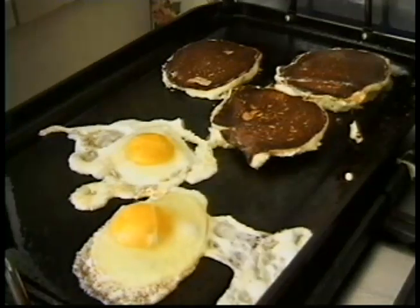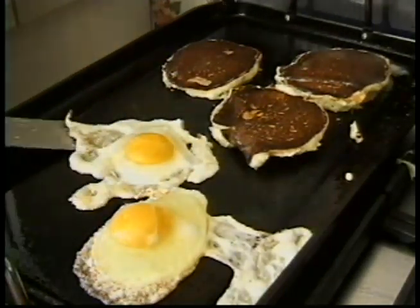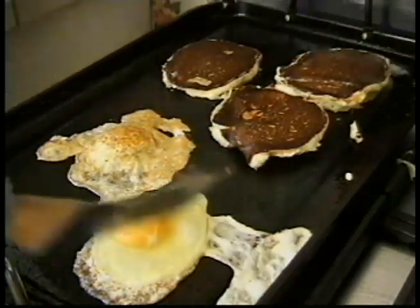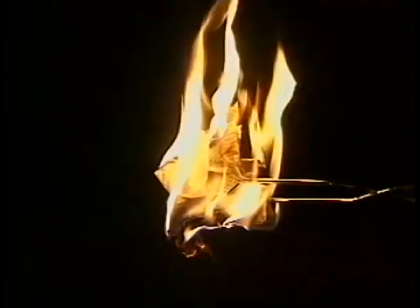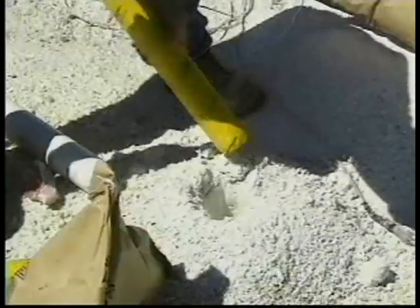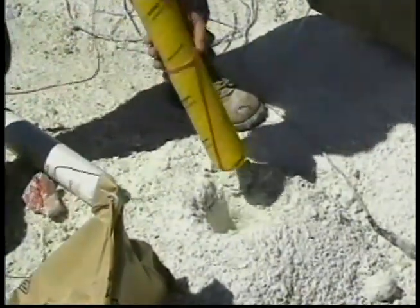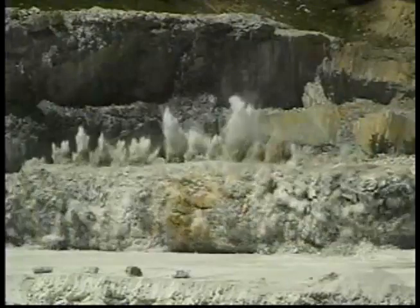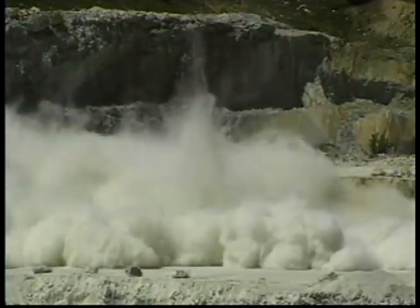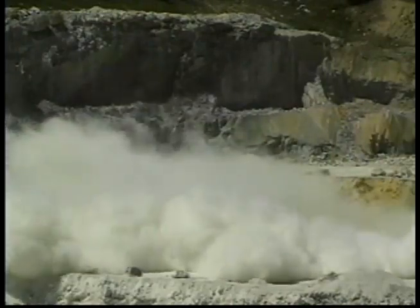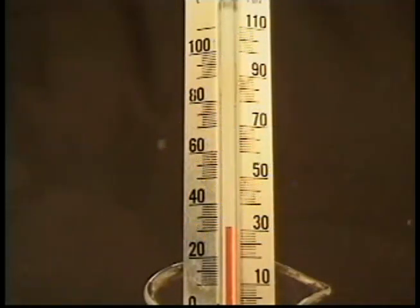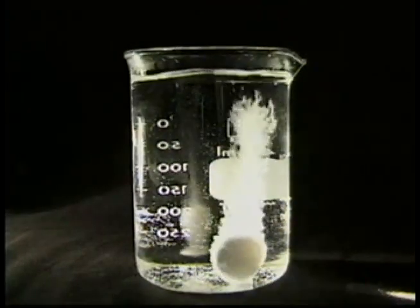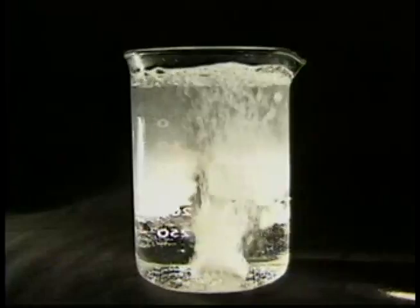Chemical reactions involve energy being given off or being absorbed. While energy is neither created nor destroyed, it does change form or position. An exothermic reaction releases energy. Heat is given off in an exothermic reaction, as in this burning piece of paper. The chemicals used to create explosions in this marble quarry also produce chemical reactions. In contrast to exothermic reactions are endothermic reactions. An endothermic reaction absorbs energy, which results in an overall lowering of temperature. This antacid, when dropped in water, creates an endothermic reaction and causes a lowering in temperature.